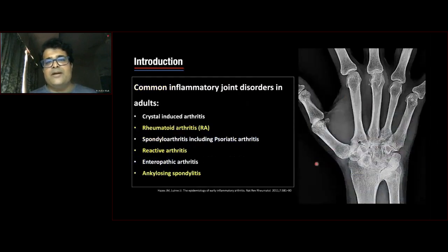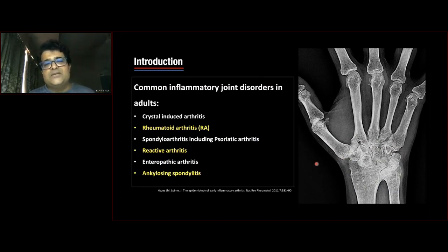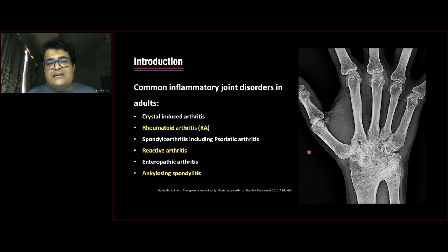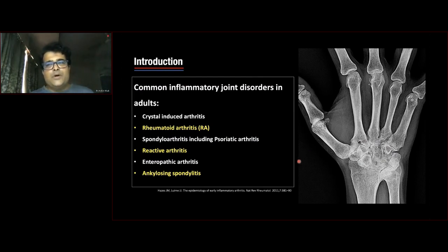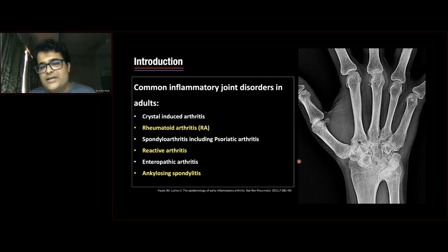Talking about inflammatory joint disorders, there are at least 150 types, but in day-to-day practice the common ones are crystal-induced arthritis, rheumatoid arthritis, spondyloarthropathies including psoriatic arthritis, reactive arthritis, enteropathic arthritis seen in ulcerative colitis and Crohn's disease, and ankylosing spondylitis. Although ankylosing spondylitis is primarily imaged on MR because spinal and sacroiliac changes are better seen there, when the peripheral skeleton is involved, that's where we see a lot on ultrasound.